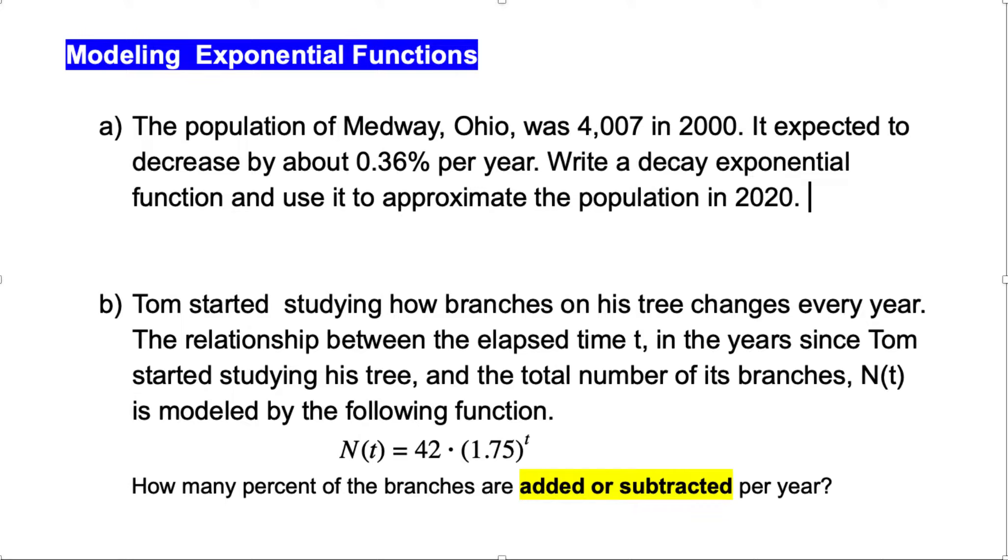Modeling exponential functions. Let's see how we can model with part A. The population of Medway, Ohio, was 4,007 in 2000. It's expected to decrease by about 0.36% per year. Write a decay exponential function and use it to approximate the population in 2020.